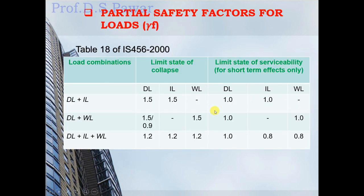Partial safety factors for loads (γ) are given in Table 18 of IS 456. Different load combinations are specified for the limit state of collapse and the limit state of serviceability. When there is a combination of dead load and imposed load, the partial safety factor for both dead load and imposed load in the limit state of collapse is 1.5, and in the limit state of serviceability it is 1.0 for both.